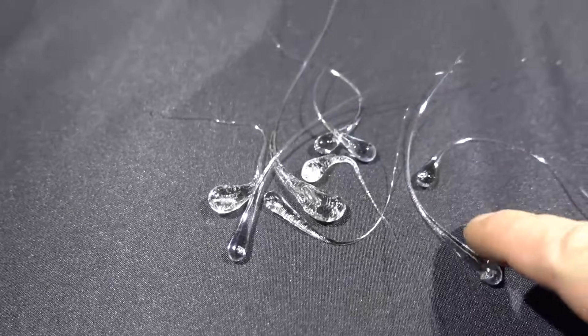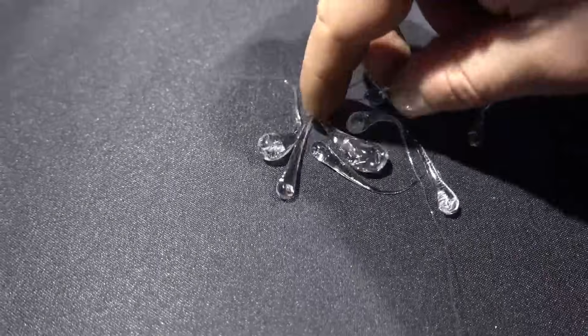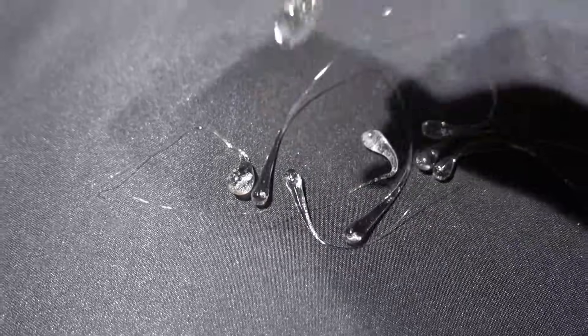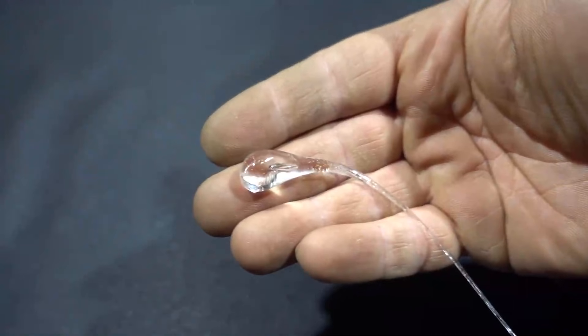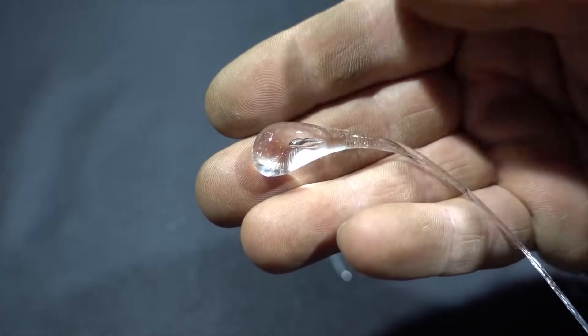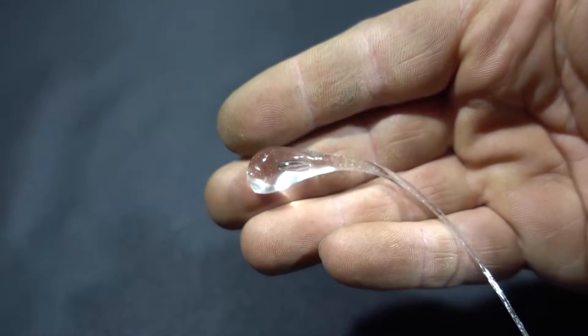One of the signs that the drops have turned out is the presence of a cavity inside. Many will think that this cavity is an air bubble, that it's a defect. But no, it's not an air bubble. This is a vacuum bubble. This vacuum bubble should be in the Rupert's drop.